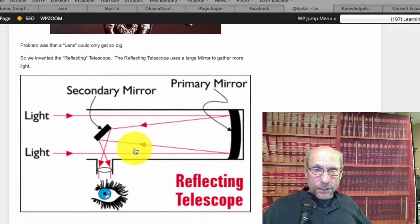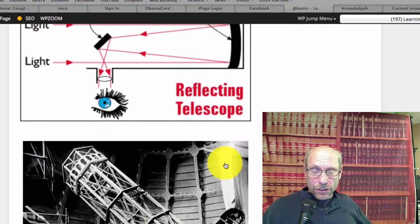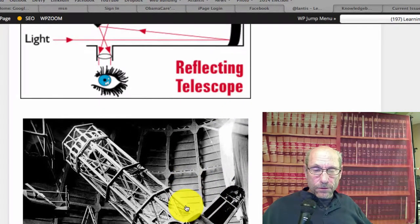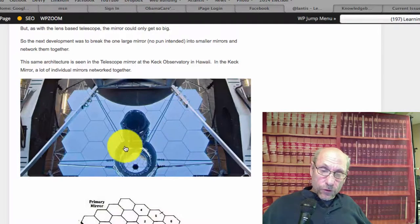Mirrors could get pretty big. This is the 200-inch, I think, at Palomar in California. But then eventually, and this is the Keck Observatory, they went to tying a bunch of smaller mirrors together.